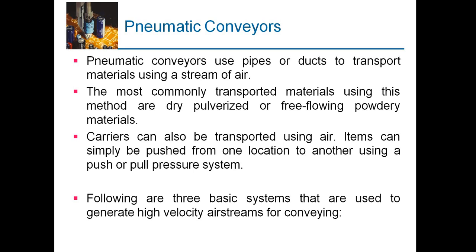The last conveyor type is the pneumatic conveyor, which uses pipes or ducts to transport material using a stream of air. The most commonly transported materials are dry, pulverized or free-flowing powdery materials — for example, pulverized coal crushed in a coal mill to very fine particle size, which is then transported to the boiler using air. Items can also be pushed from one location to another using a push or pull pressure system.